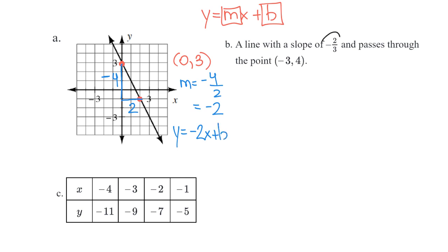So here we are given the slope and we are given a point. Ooh, so I know the slope y equals negative two-thirds x plus b, but I do not know the y-intercept. How can I use this fact to help me?